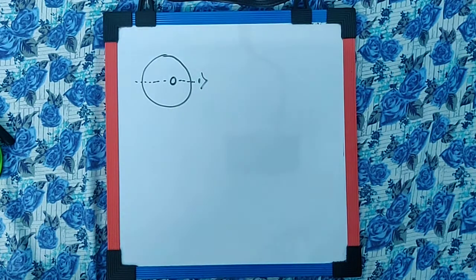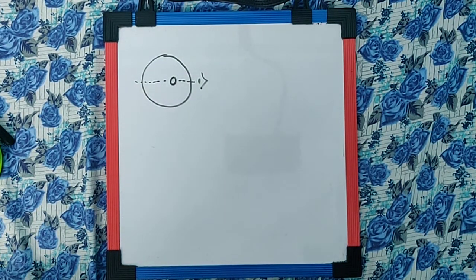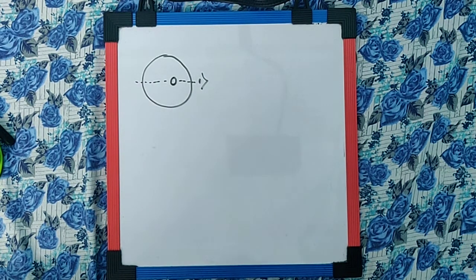Now from the diagram it appears that the u must be negative but since we are supposed to find the value of u, we will not assume its sign convention. I repeat, the one which is unknown we should not assume its sign convention.